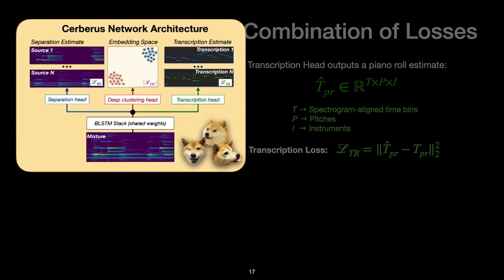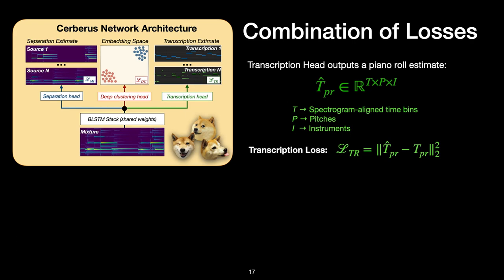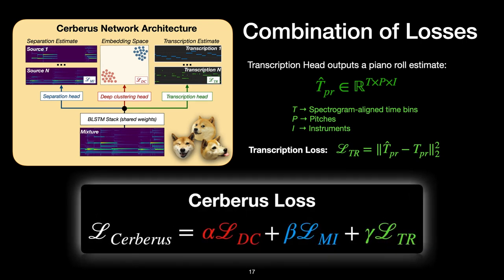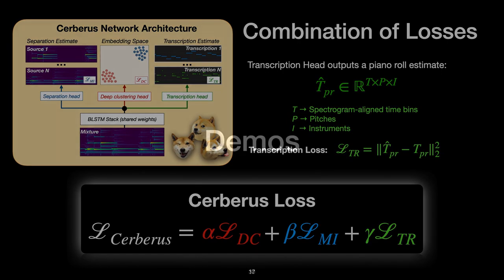The transcription head produces a real-valued matrix with shape T by P by I, where T is timeframes aligned with the spectrogram, P is the number of possible pitches, and I is the number of instruments to be transcribed. Once trained, the output of this head is quantized to produce a piano roll transcription. Cerberus is trained using a weighted linear combination of three loss functions corresponding to the different heads. For inference, any combination of the three heads can be used, depending on the task.